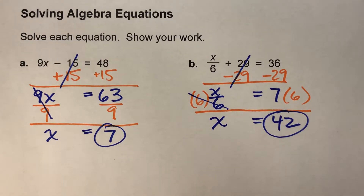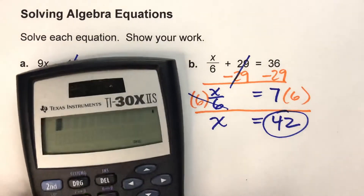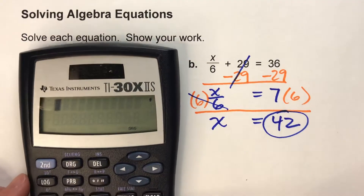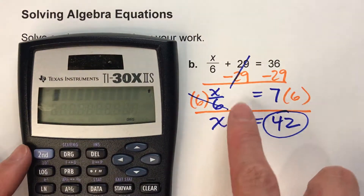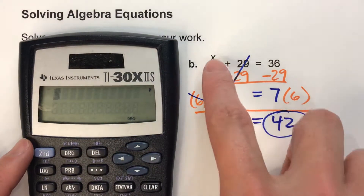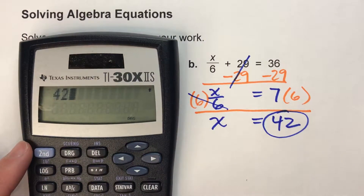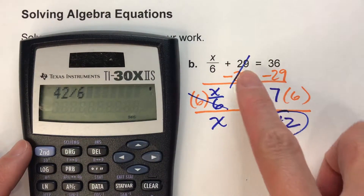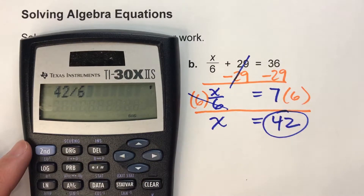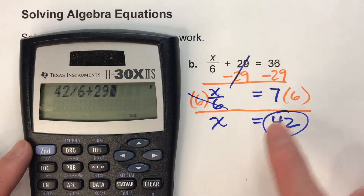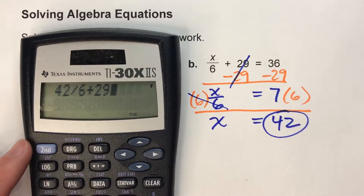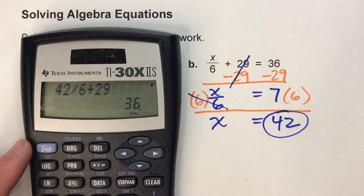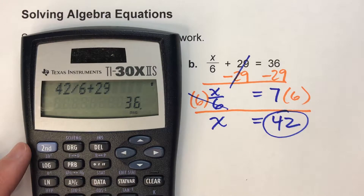We can check our answer by putting it in the calculator. Does 42 divided by 6 plus 29 equal 36? Yes, it does. So we're good.